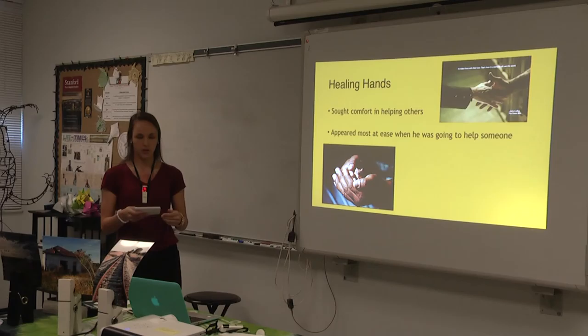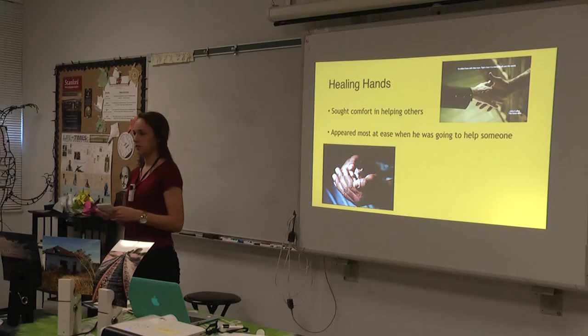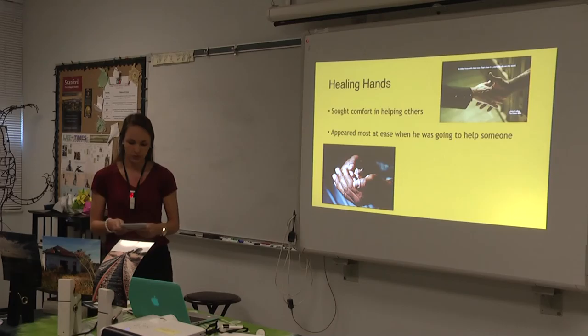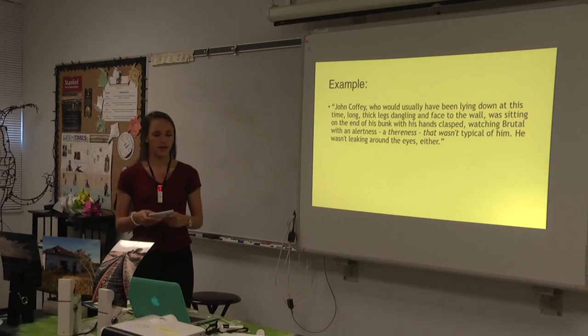John seemed to be the happiest when he was helping others. He would keep to himself and often weep until there was an opportunity to save somebody. The time before they went to save Melinda Morse is the most obvious example — he was ready and waiting instead of weeping as he usually would be. The excerpt reads: 'John Coffey, who would usually have been lying down at this time, thick legs dangling and face to the wall, was sitting on the end of his bunk with his hands clasped, watching Brutus with an alertness, a there-ness, that wasn't typical of him. He wasn't leaking around the eyes either.'